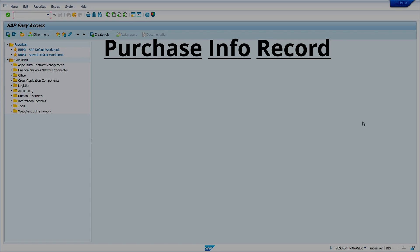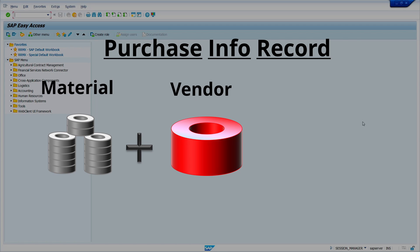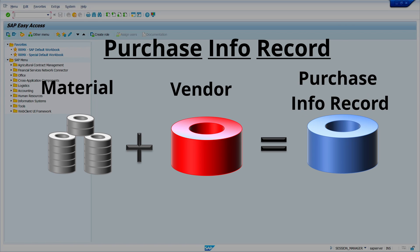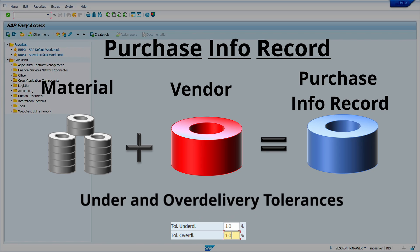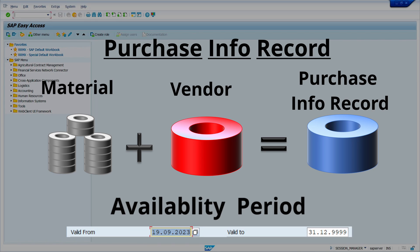Brief introduction about purchasing inforecords. Purchasing inforecords consist of purchase terms for a specific material and vendor master. In simple words, a purchase inforecord is a combination of material and vendor masters. It consists of purchasing price, tax code, delivery date, over-delivery and under-delivery limits, and availability period.